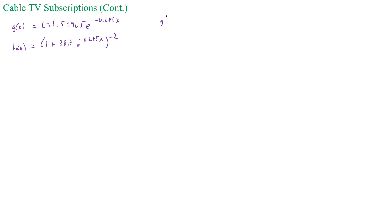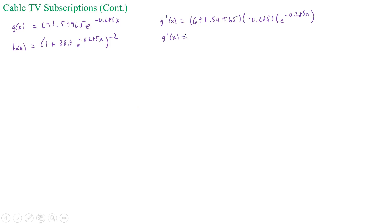Now I can find g prime of x — no problem, that's just going straight across. That's going to be 691.54965 times negative 0.285 — when I take the ln of this, that negative 0.285 comes out and ln of e is 1 — times e to the negative 0.285x. Simplifying that, I get negative 197.0916503 e to the negative 0.285x.